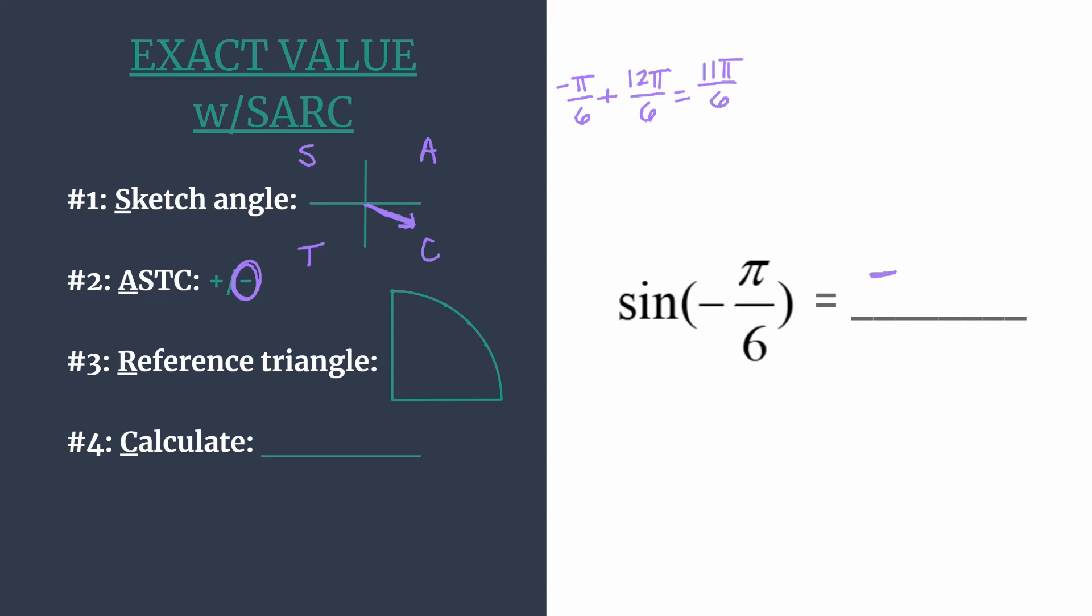And now we can move on to step three and find our reference angle for our special right triangle. Alright, so our reference angle is simply the amount of rotation to get from the terminal side to the x-axis.